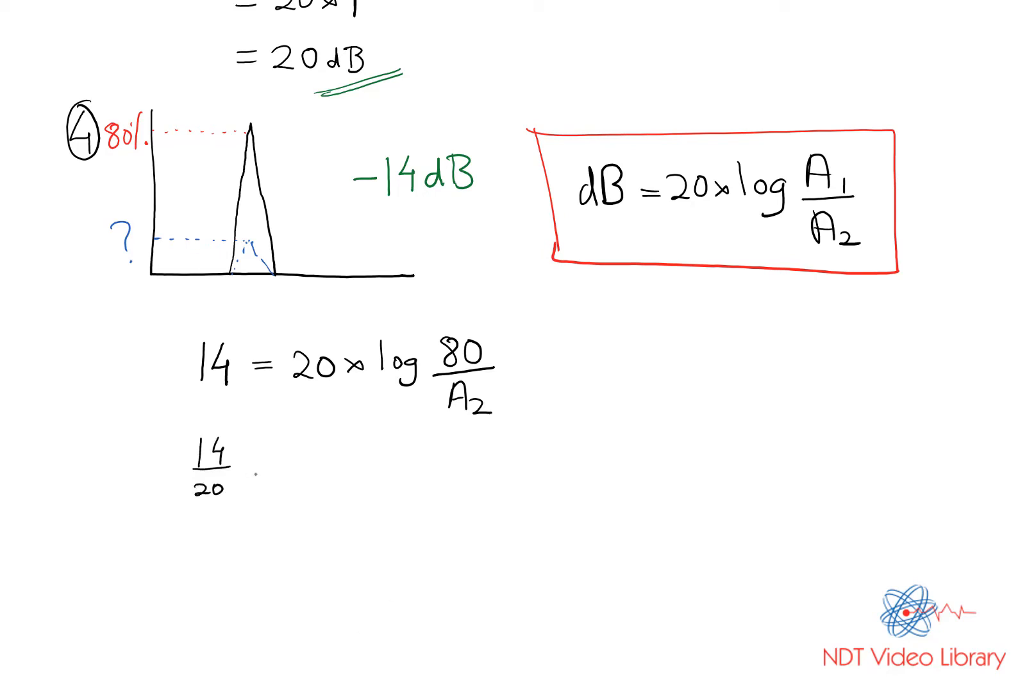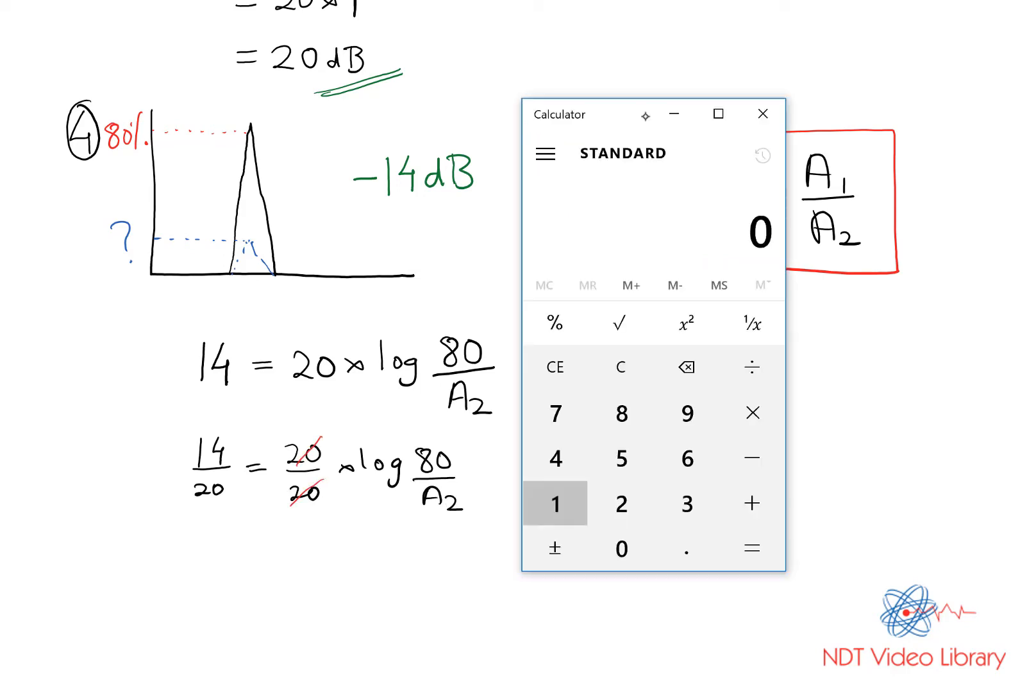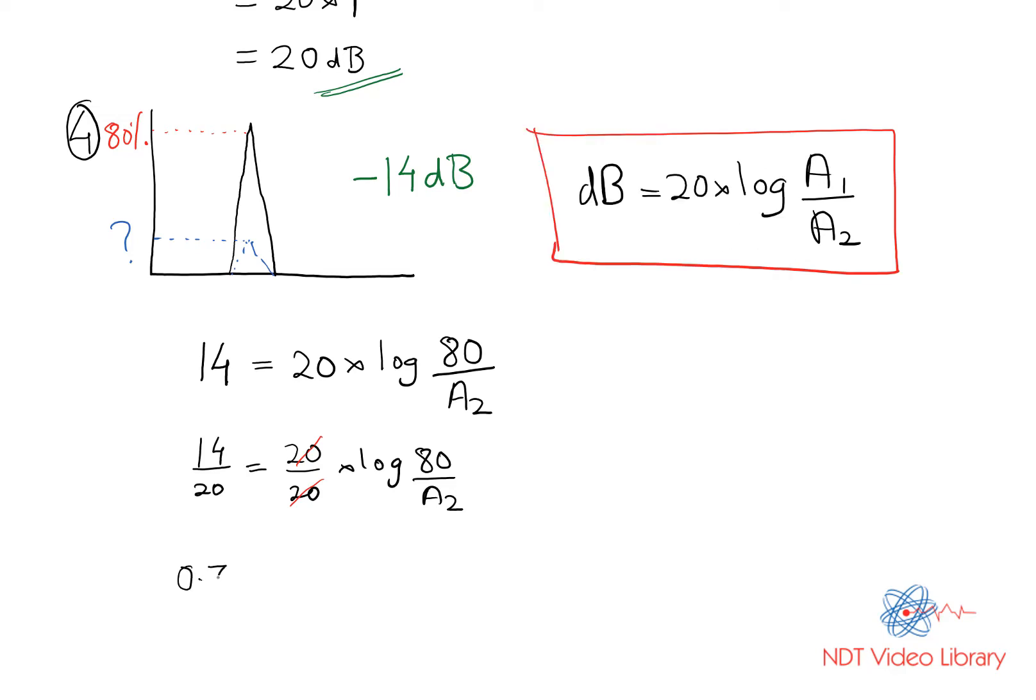Divide both sides by 20, so you get 14 divided by 20 as 0.7. So 0.7 equals log of 80 divided by A2.